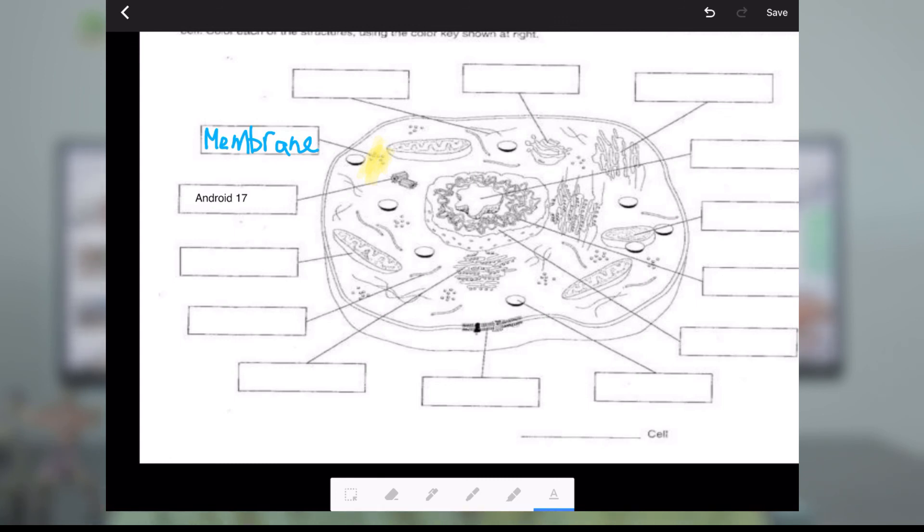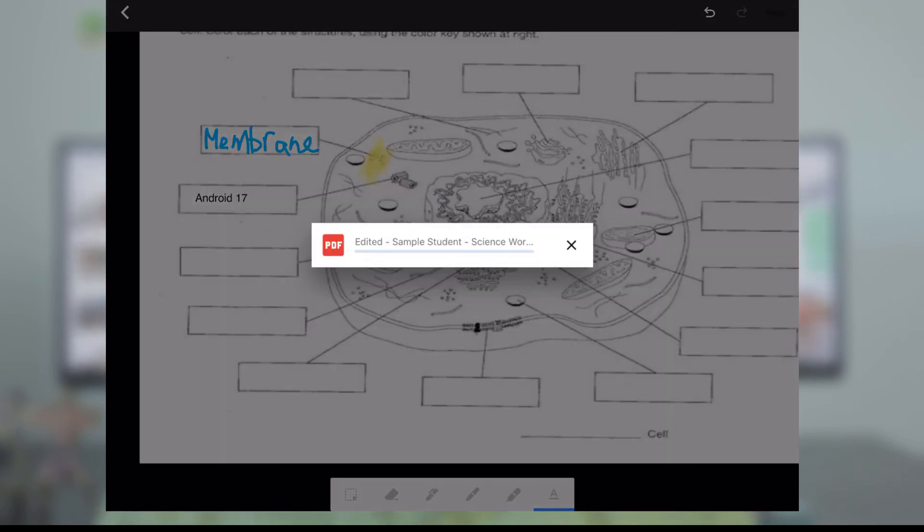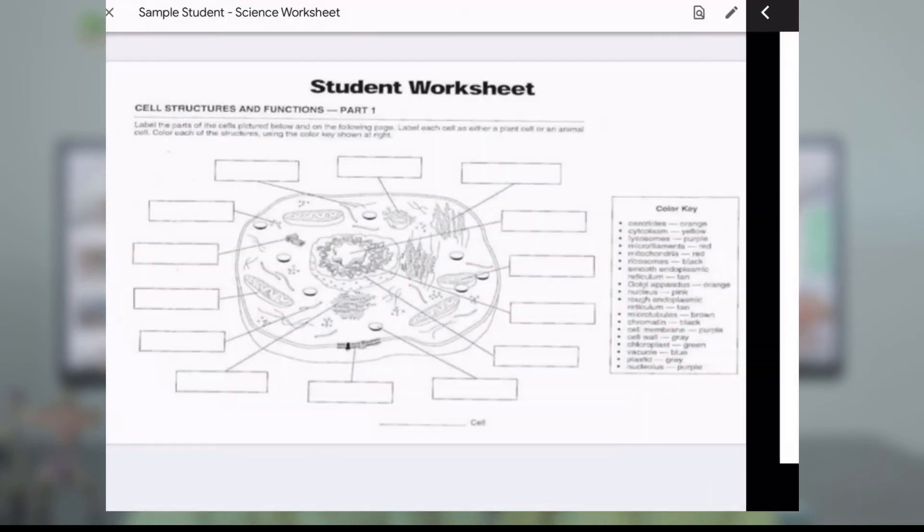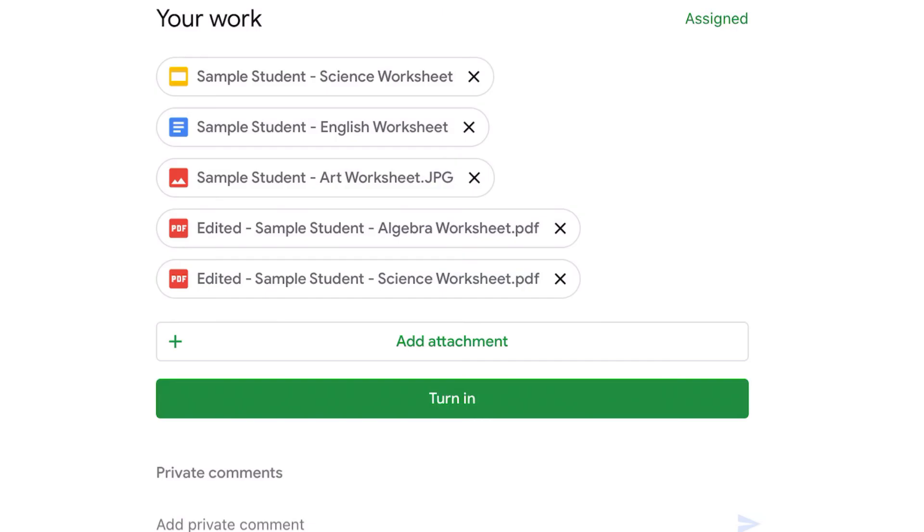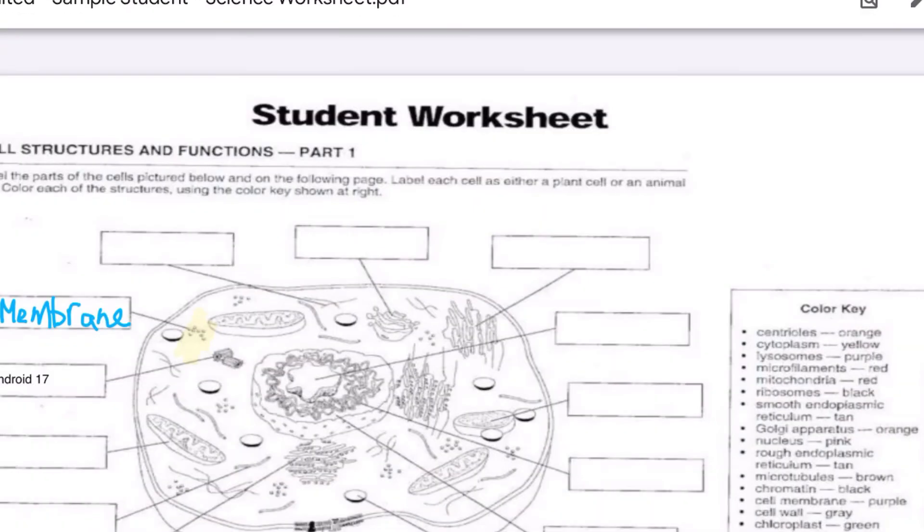And this was a slide, so this was actually different from the editing. When you save it, it's going to save it as a PDF. It will not save it as a slide. But your teacher will still be able to see your edited response. So this is the edited science worksheet with my response.